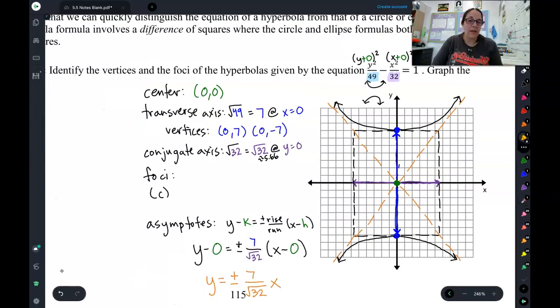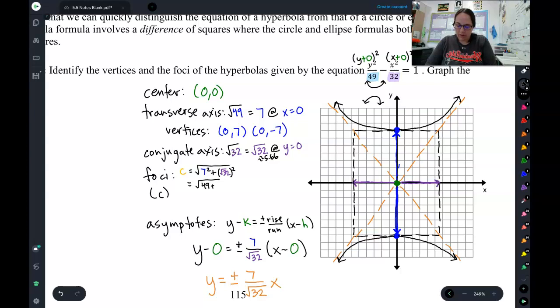Looks like the last thing I need to find is C to find my foci. So the equation for C is square root, and then we do the transverse axis squared, plus the conjugate axis squared. So, let's see, that's going to be 49 plus 32, which is the square root of 81, which is a beautiful 9.